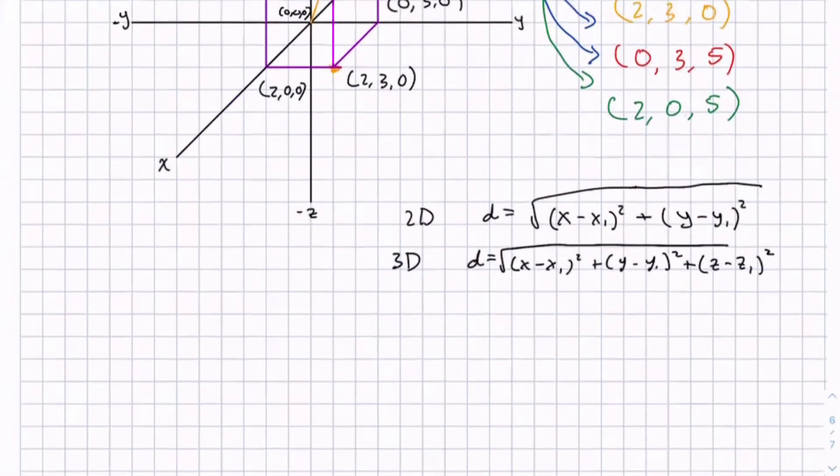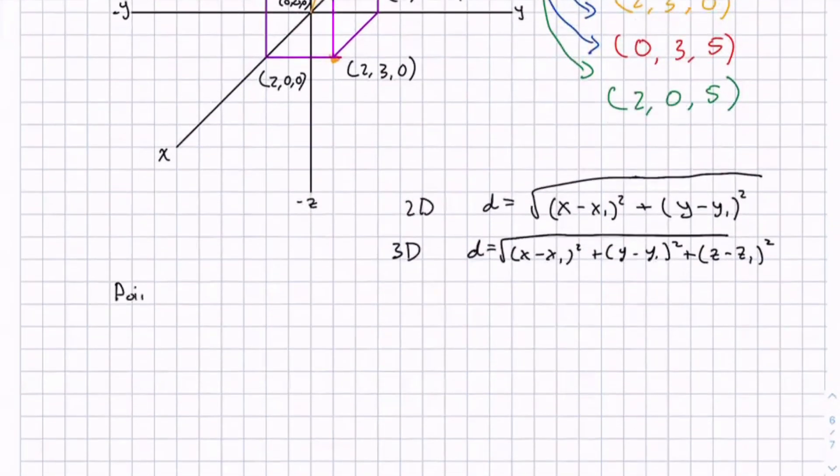So you get d equals √[(x - x1)² + (y - y1)² + (z - z1)²]. So if the points we have are 2, 3, 5 and 0, 0, 0, you'd have the distance equals the square root of (2 - 0)² + (3 - 0)² + (5 - 0)².